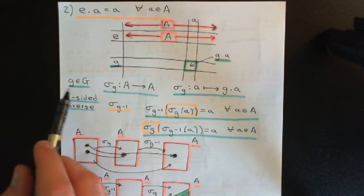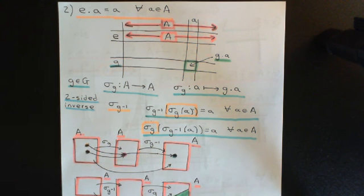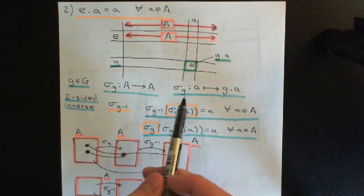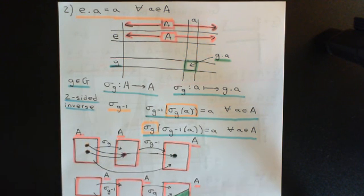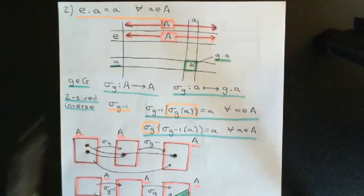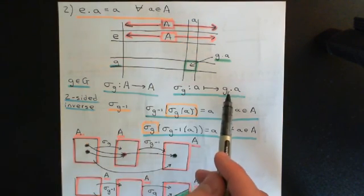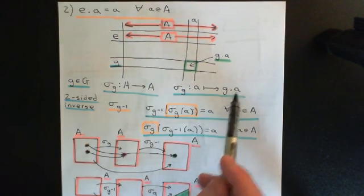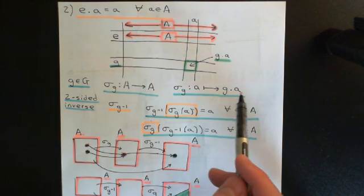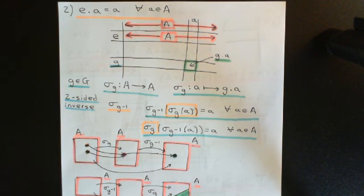If you take an arbitrary element g from our group G, then the set permutation we associate with this element g — which we denote σ_g — is going to be the mapping that sends all elements a from the set A onto the element g·a. So g acting on the element a.